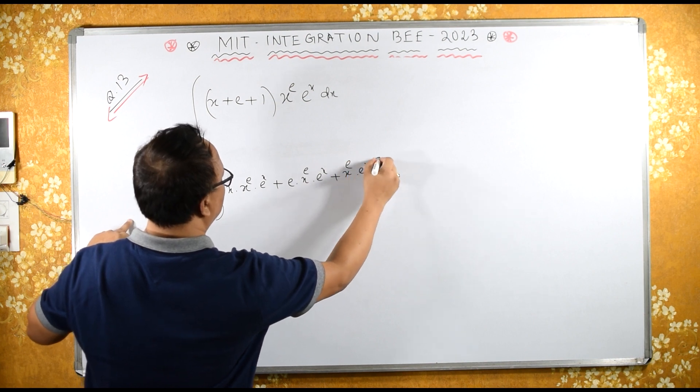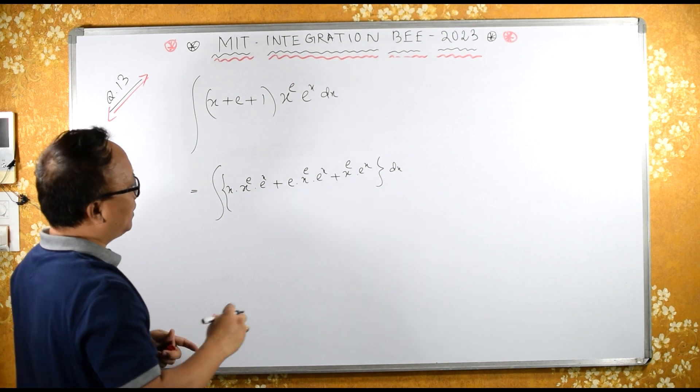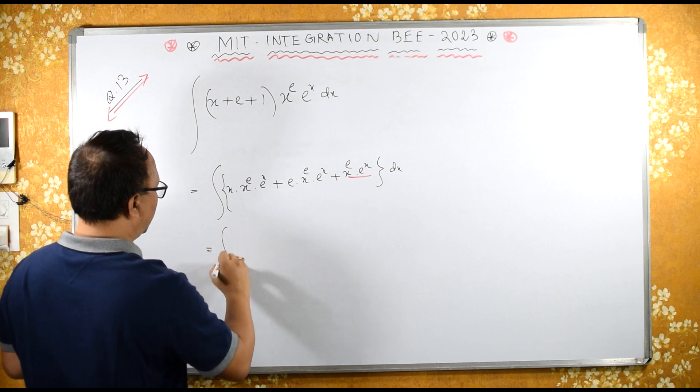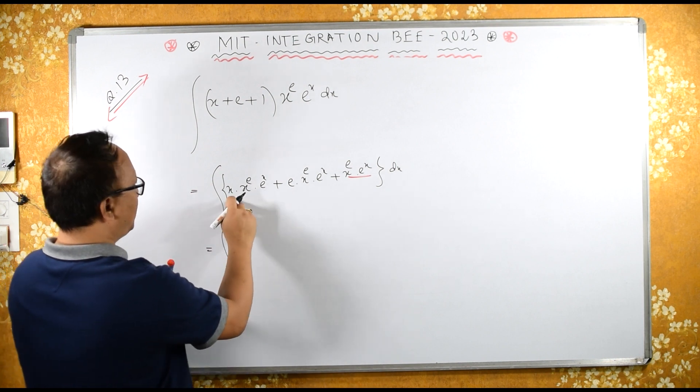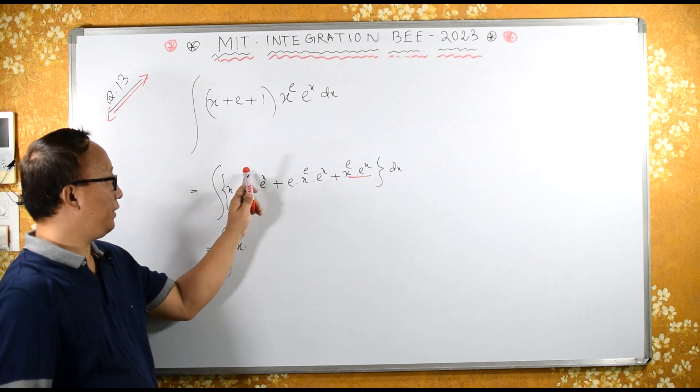Now let's take this common. So it equals integral x, and this plus this is what - e raise to base are equal, we can add the indices, therefore e is x raise to e plus 1 into e raise to x plus...